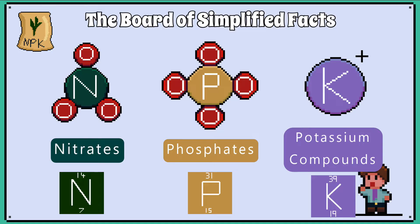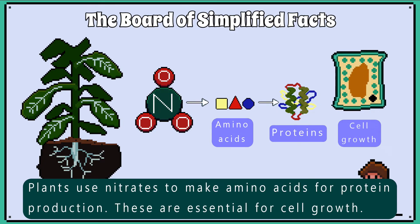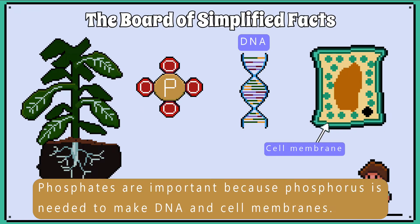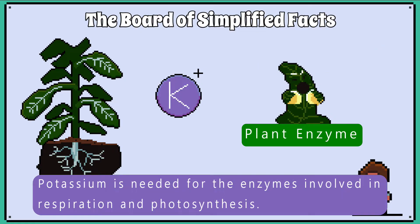Note these are the elemental symbols for nitrogen, phosphorus and potassium. Plants use nitrates to make amino acids for protein production, which are essential for cell growth. Phosphates are important because phosphorus is needed to make DNA and cell membranes. Potassium is needed for the enzymes involved in respiration and photosynthesis.